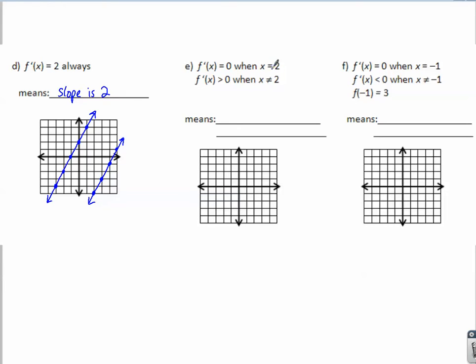f'(x) = 0 only when x = 2. So the slope is zero when x equals two, just at one spot. And the second part, the slope is positive everywhere else. So let's go to where x is two. That's at this spot. That's where x is two. So it has to be flat. The function has to be flat there.